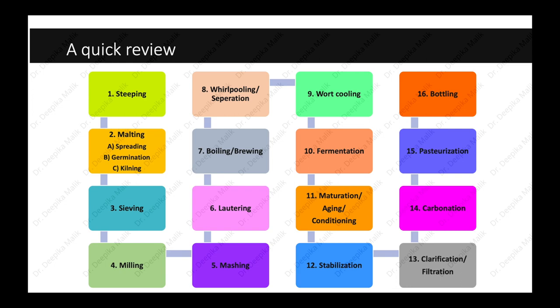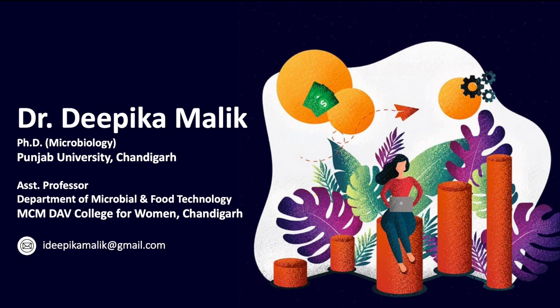Tenth is fermentation, where yeast is pitched into the wort and wort sugars are converted into alcohol and carbon dioxide. Eleventh is conditioning and maturing so that the flavor in the beer develops and undesirable volatile components dissipate. Twelfth is stabilization to allow colloidal stabilization — particles to remain suspended in solution. Thirteenth is clarification to give beer its transparency. Fourteenth is carbonation, where carbon dioxide is added to give beer its fizziness. Fifteenth is pasteurization, which kills bacteria and remaining yeast that may allow further fermentation. Sixteenth is bottling or packaging of beer into bottles, barrels, or cans.